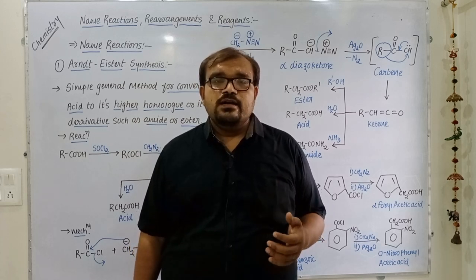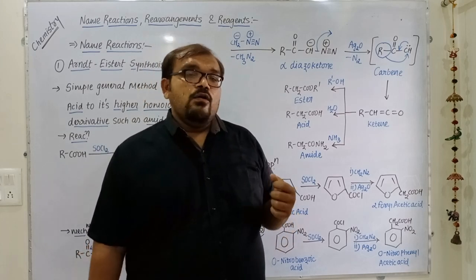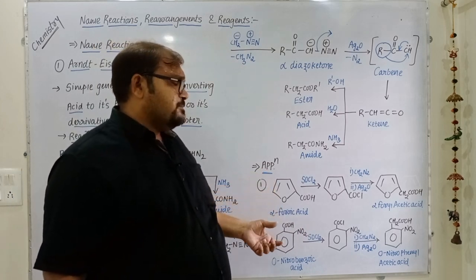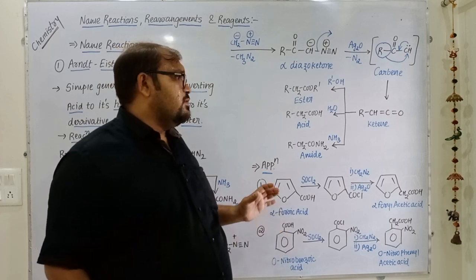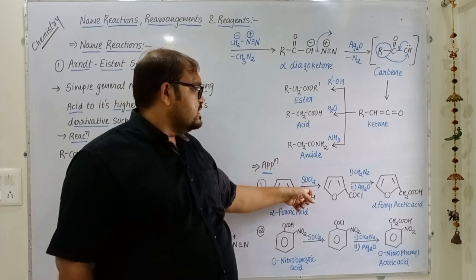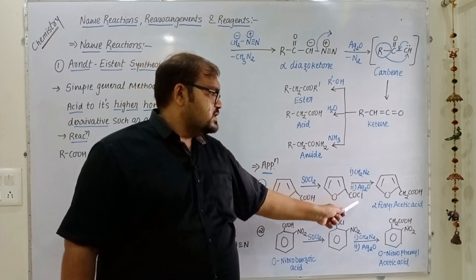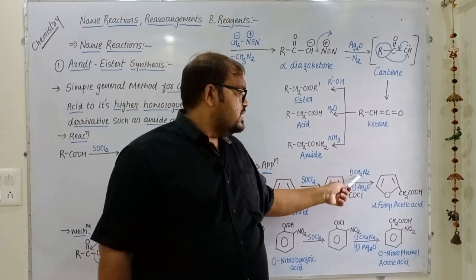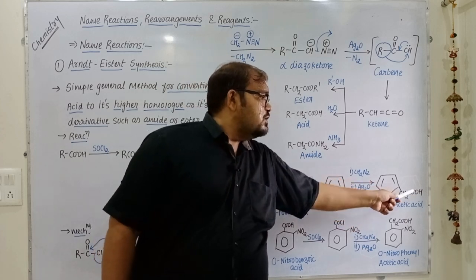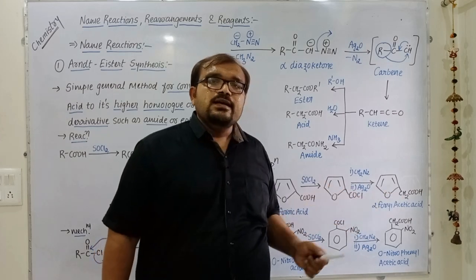Now let's see the application of this reaction as it appears in university exam questions. There are two important applications. First, when you have 2-furoic acid and react it with thionyl chloride, the COOH group is converted to acid chloride (COCl). This acid chloride, when reacted with diazomethane and then silver oxide, is converted into the higher homologue acid — so 2-furoic acid is converted into 2-furoylacetic acid.